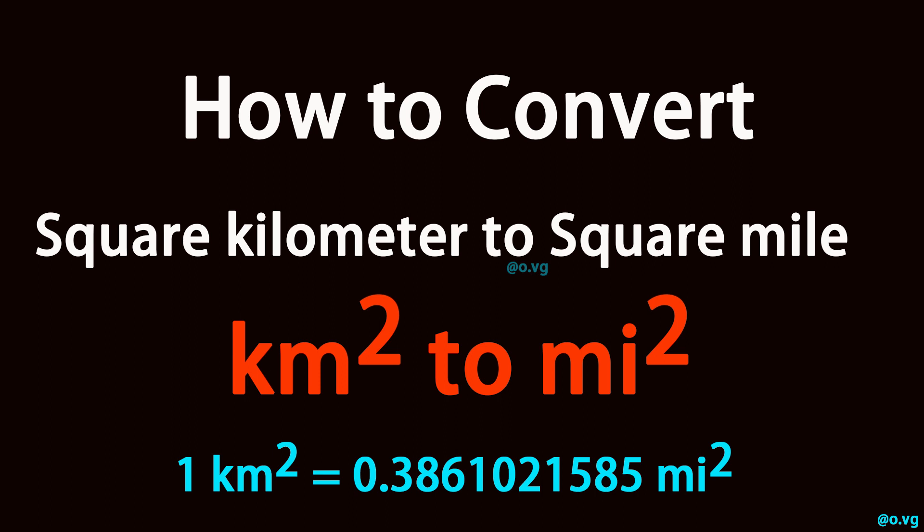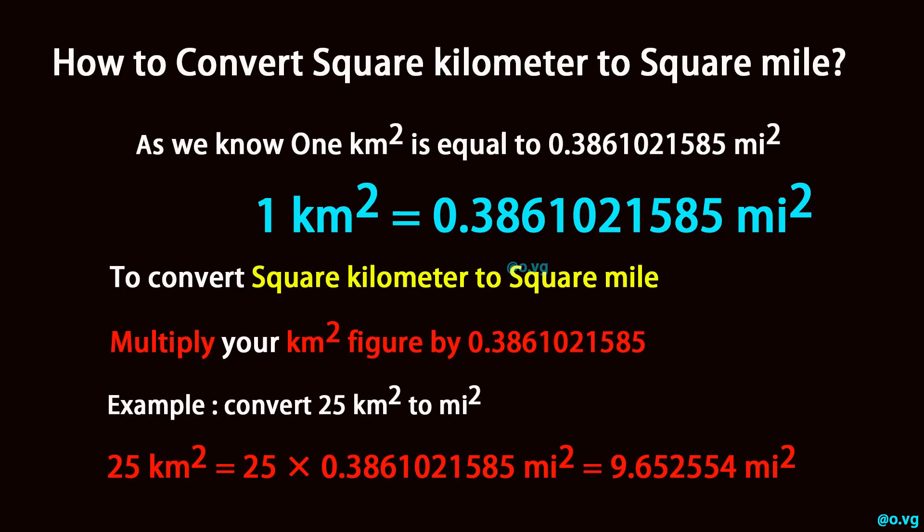How to convert square kilometer to square mile. As we know, one square kilometer is equal to 0.3861021585 square mile. To convert square kilometer to square mile, multiply your square kilometer figure by 0.3861021585.